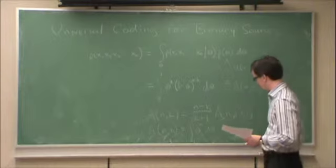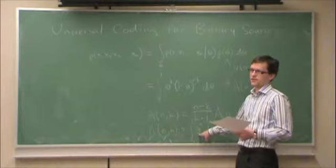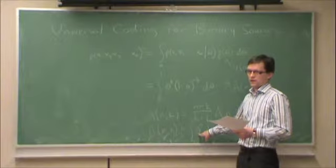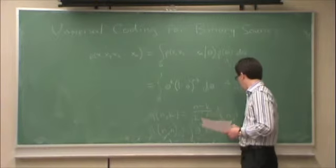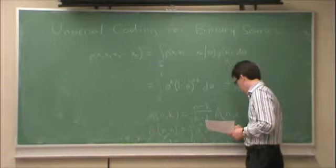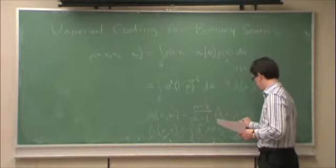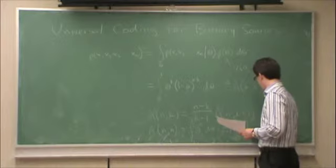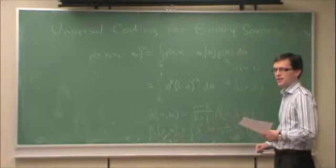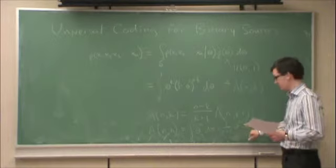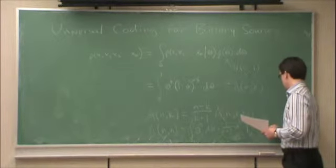What is the indefinite integral of theta to the n? 1 over n plus 1 times raised to the n plus 1. To the n plus 1 exactly, from 0 to 1. So, if theta is 1, this is just 1, if theta is 0, this is 0, so this is 1 over n plus 1.